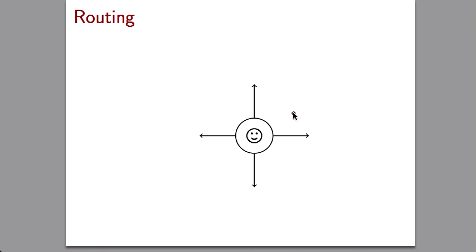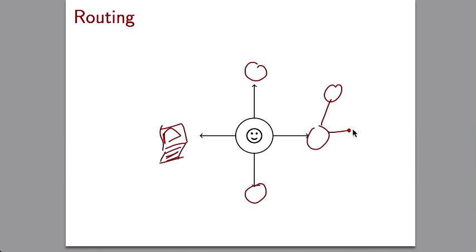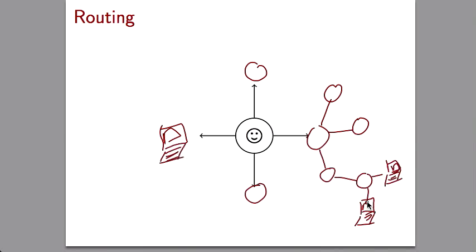So how does the internet work? First, let's look at the physical layout. Let's say this is your computer — a desktop machine connected through a wire to a router, a little box sitting somewhere in your office or building. That router is connected to other routers, and those routers are connected to other routers, and so forth. Some of those routers are connected to computers, so the computers are the leaf nodes.